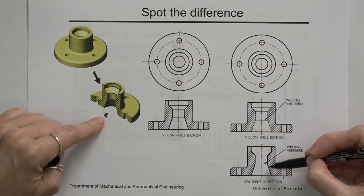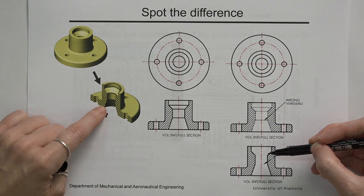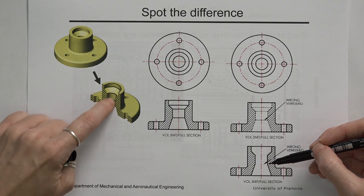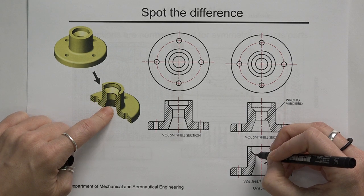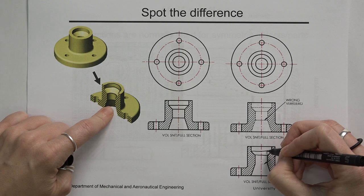It's also not correct to not include any of that information because there's definitely changes in depth here. So you definitely have to indicate that these lines have to be there.